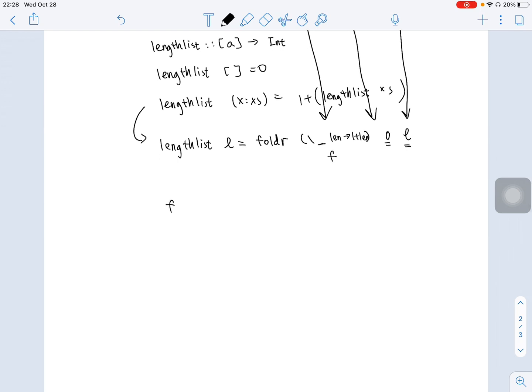So, if we expand the definition for FoldR, it would look like this: x1, f, x2, f, x3, f, ... xn, z.